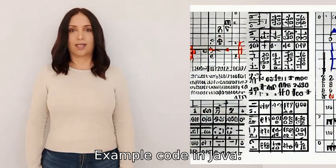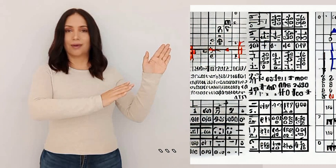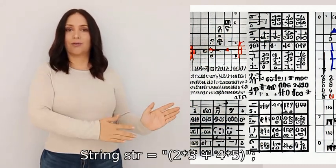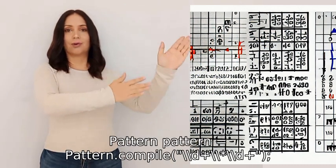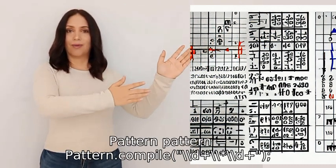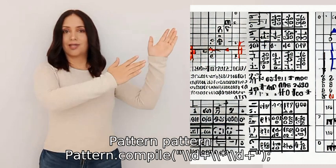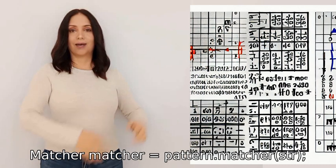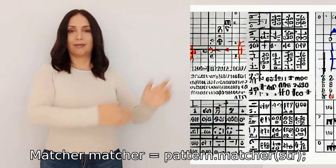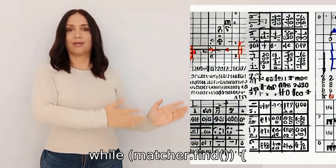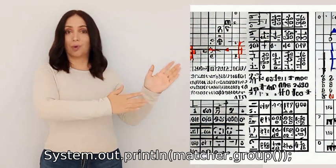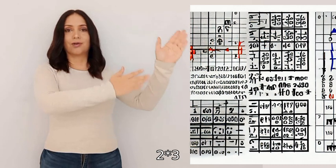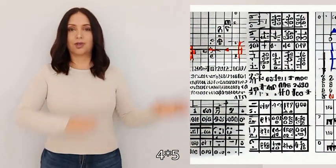Example code in Java: String str = "2*3+4*5"; Pattern pattern = Pattern.compile("\\d+\\*\\d+"); Matcher matcher = pattern.matcher(str); while(matcher.find()) System.out.println(matcher.group()); This will output 2*3 4*5.